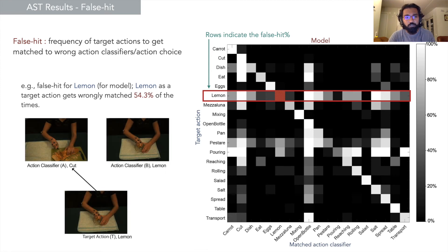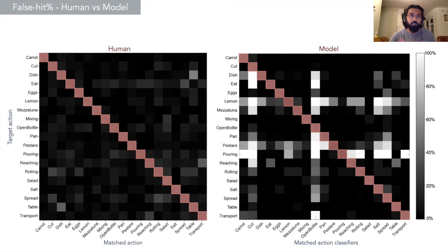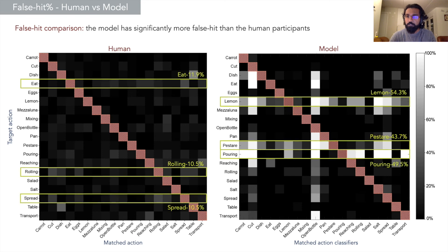If we compare false hit for both, we see that the model has significantly more false hits than the humans, and again it's rising mainly due to a few of the actions.